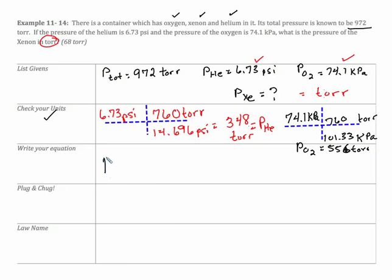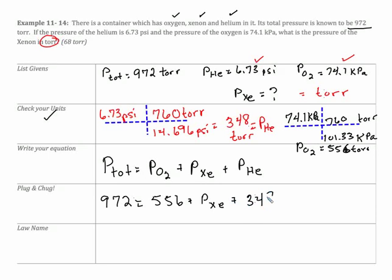Now, the equation is a form. We're going to see two forms, but this is a form of Dalton's Law. Is that the pressure total is the pressure for my oxygen plus my pressure for my xenon plus my pressure for my helium. So now all I have to do is pretty much plug and chug. 972, oxygen was 556, xenon was my unknown, and helium was 348. And when I solve for my partial pressure of my xenon, you should get 68 torr. And this is Dalton's Law.